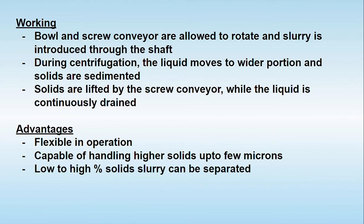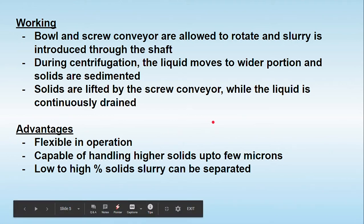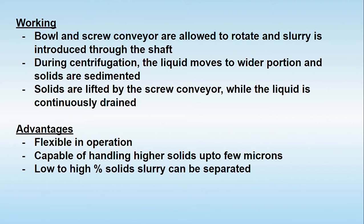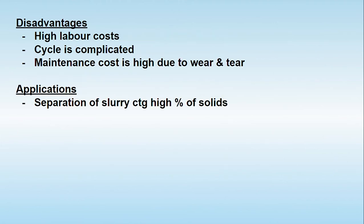The bowl and screw conveyor both rotate and the slurry is introduced. During centrifugation, the liquid moves to the wider portion while the solids are lifted by the screw conveyor and the liquid continues to drain out. The advantages are that it is a continuous operation, flexible in operation, and capable of handling a higher percentage of solids down to a few microns in size, and can handle low to high percent slurries.